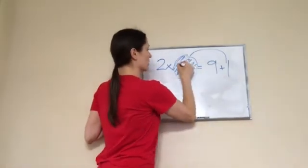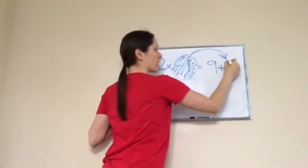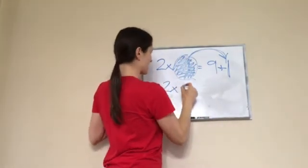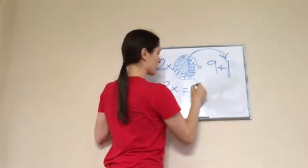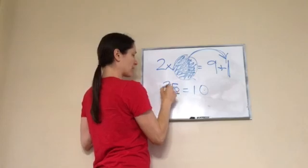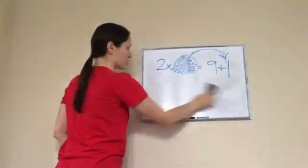He took the minus 1 that was right here, and when you bring it across the equal sign, it changes to plus 1. It's opposite. Then it becomes 2x equals, what's 9 plus 1? 10. And we know it's 2 times what equals 10, and we know that 2 times 5 equals 10. Good job. That is lesson 106.